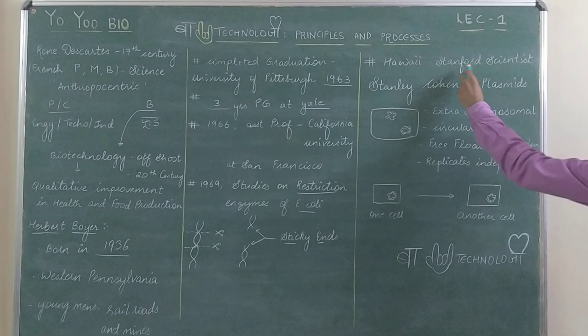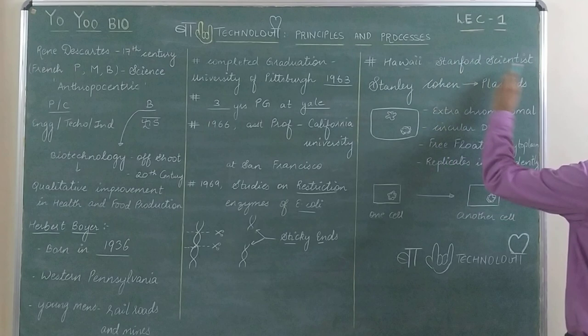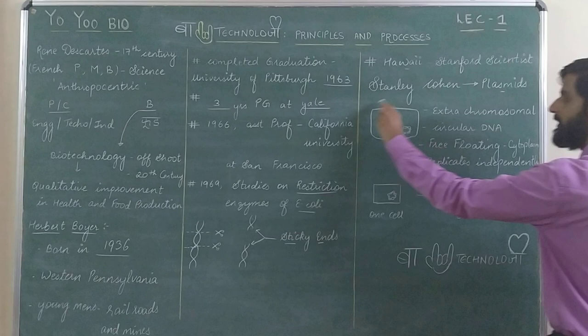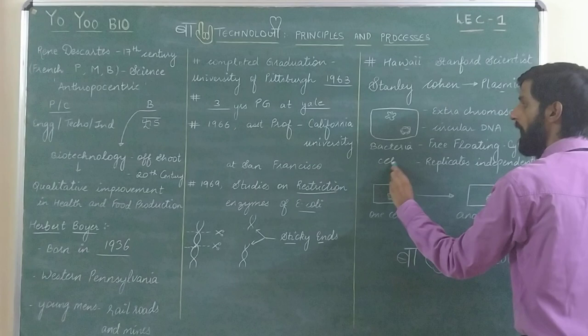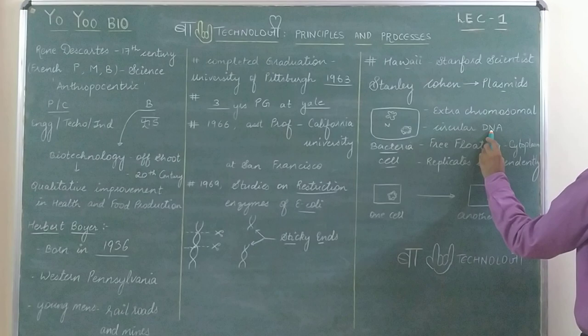This discovery by Herbert Boyer connected him with a scientist called Stanley Cohen. Stanley Cohen is a Stanford scientist who was working on plasmids. What is a plasmid? This is a bacteria cell — the bacteria has a genetic material called nucleoid. A plasmid is an extra-chromosomal, circular DNA which is free-floating in the cytoplasm and it replicates independently.